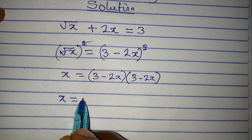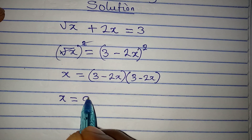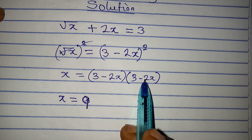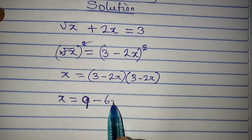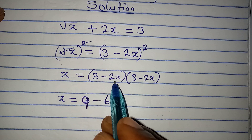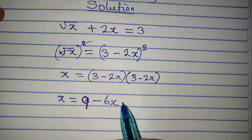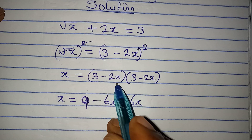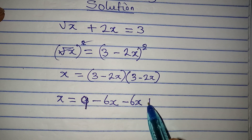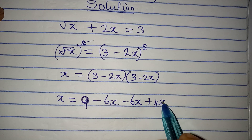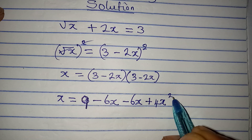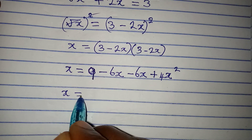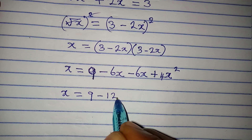So x equals 3 times 3 which is 9, then 3 times minus 2x gives minus 6x, then minus 2x times 3 gives another minus 6x, so altogether we continue to get x equal to 9 minus 12x.